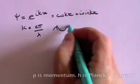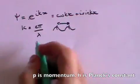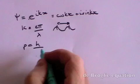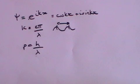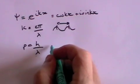p equals h, which is Planck's constant, over λ. That's the de Broglie equation, which is set out in more detail in my video on reasons for quantum mechanics. So p equals k ℏ, and ℏ is h over 2π.